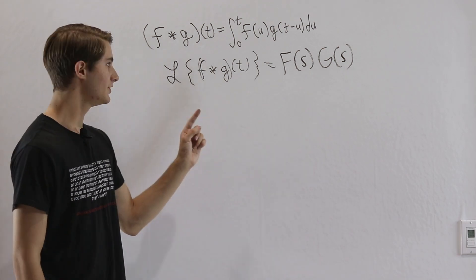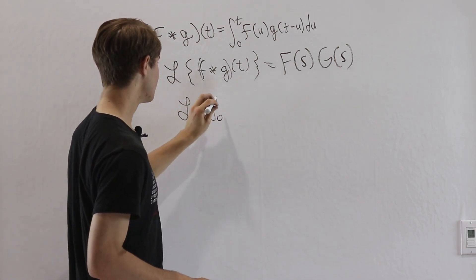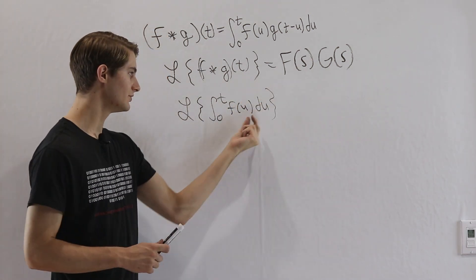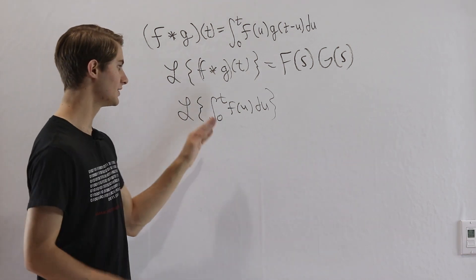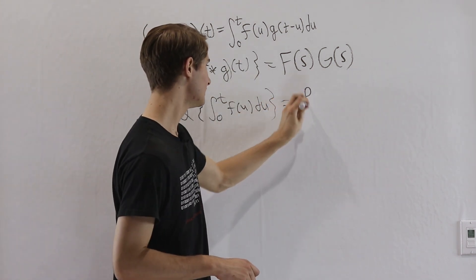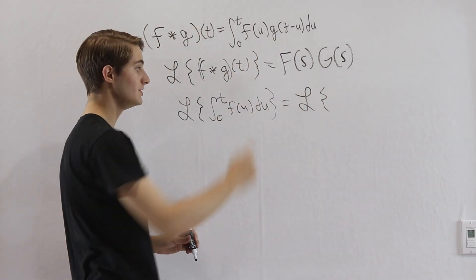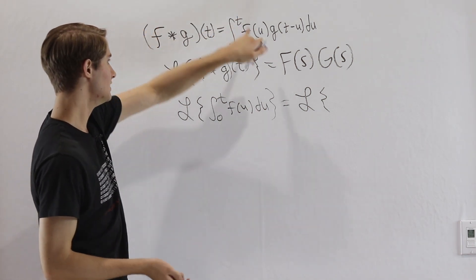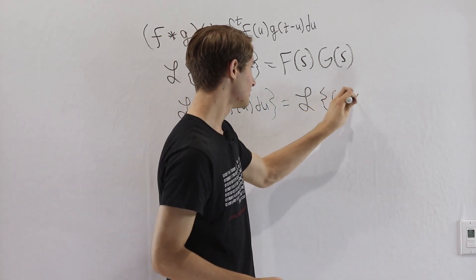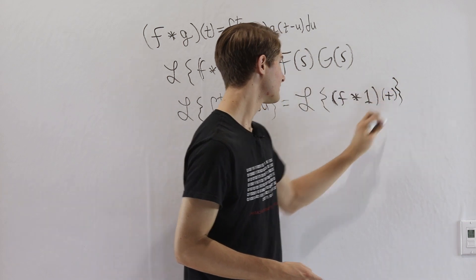This is our convolution theorem. We're also going to talk about one more identity: the Laplace transform of the integral from 0 to t of f of u du. In this case there's no second function — just the integral of f of u. We can write this as a convolution: if g of t minus u equals 1, then this is exactly the integral from 0 to t of f of u du. So this integral is f convoluted with g of t equals 1.